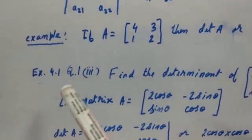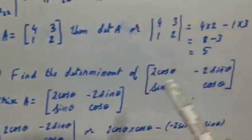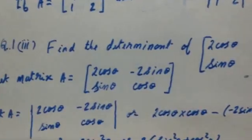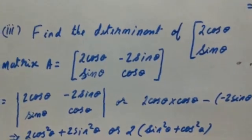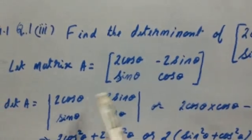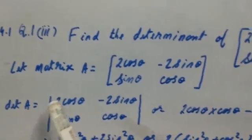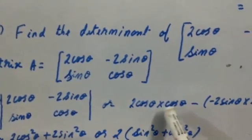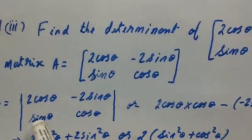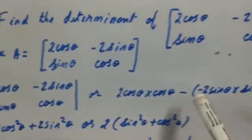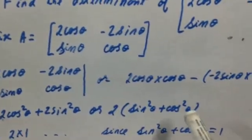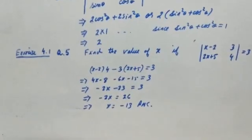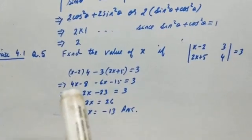Two questions from your book: exercise 4.1, question number 1, third part — the determinant of a 2×2 matrix has to be found. Using the formula A₁₁ × A₂₂ minus A₂₁ × A₁₂, after simplifying we get the result. One more example: exercise 4.1, question number 5.